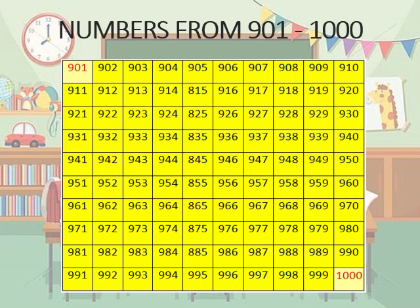After 900 — 901, 902, 903, and so on the numbers are generated. The last three digit number is 999. After that, the four digit number 1000 starts.